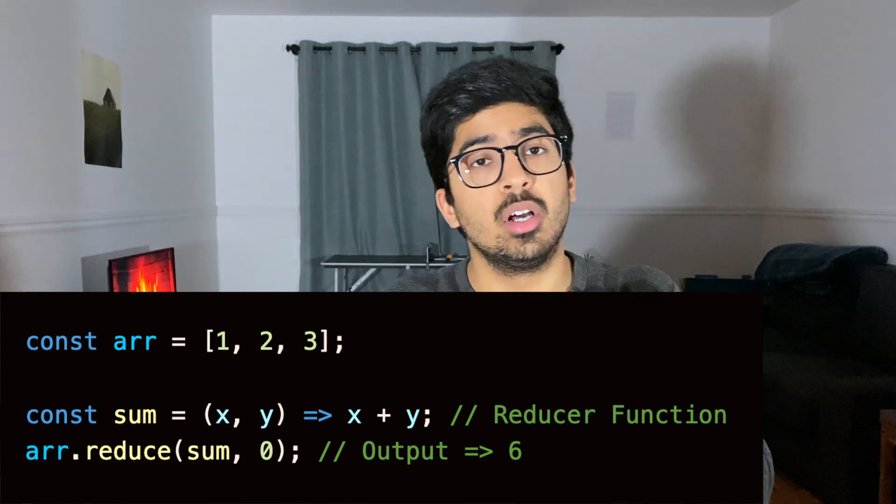Now let's start with the method that people are most afraid to use and that is reduce. So it's important to understand that the reduce method accepts a reducer function and it gives us a value in the end. So in this example, you can see we are using the reducer created here with the constant sum is equal to x comma y which will return us x plus y. So this in our case is a reducer.